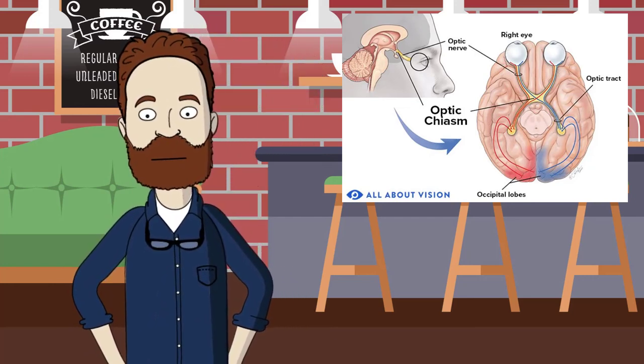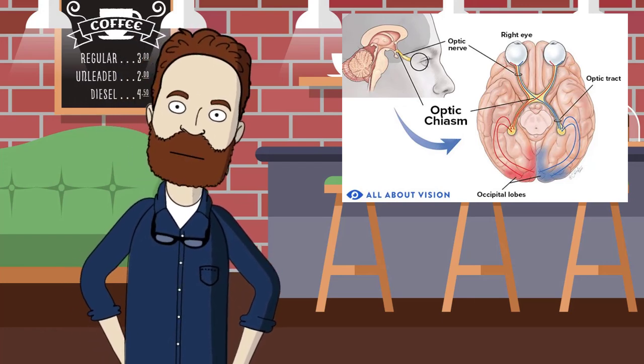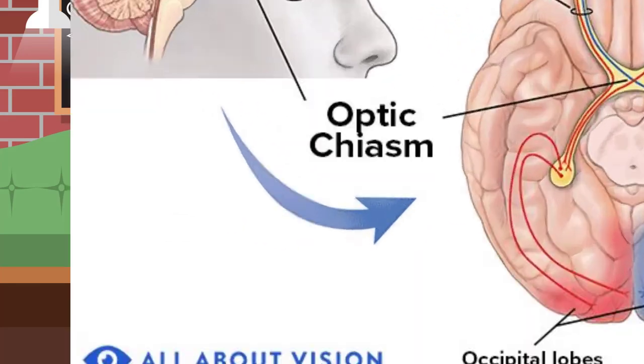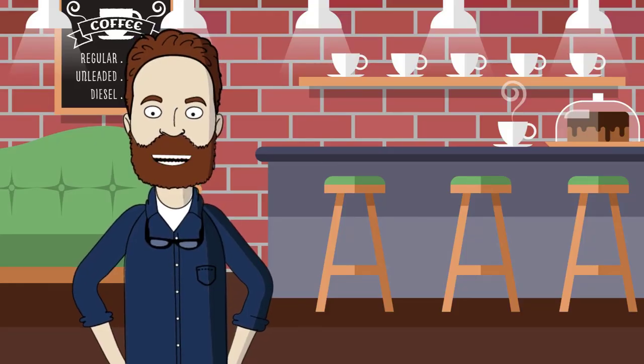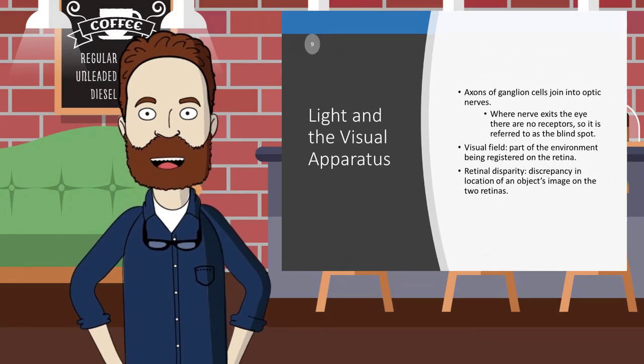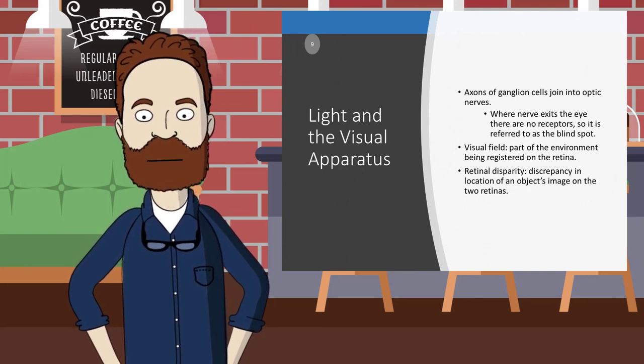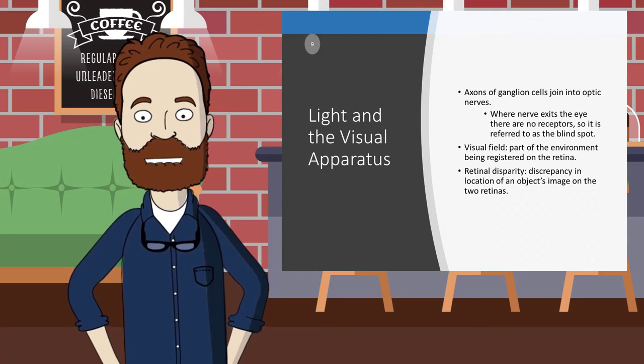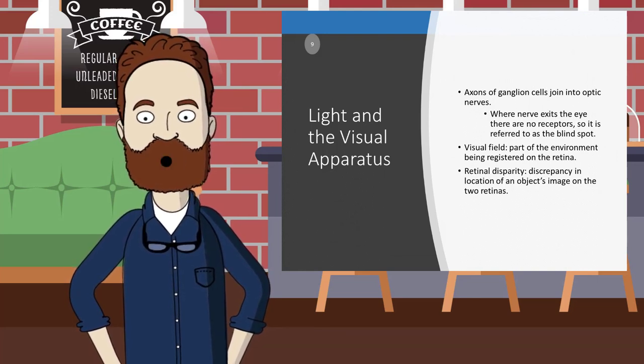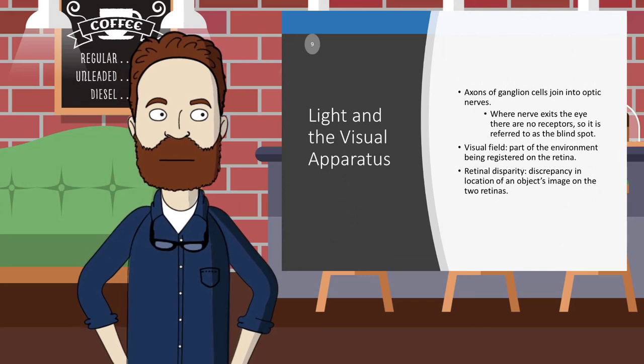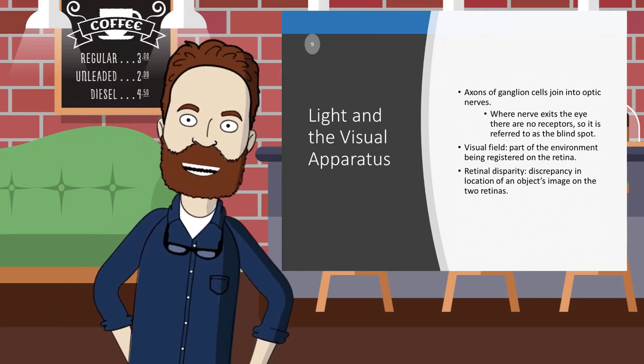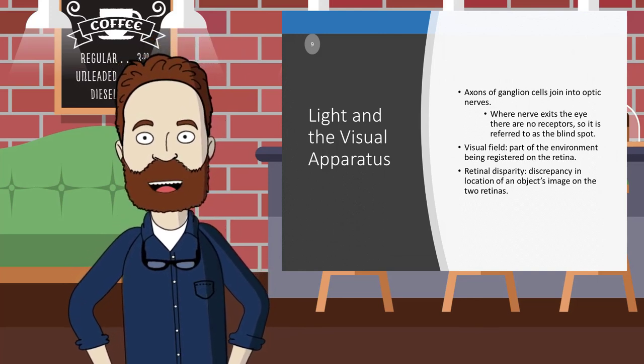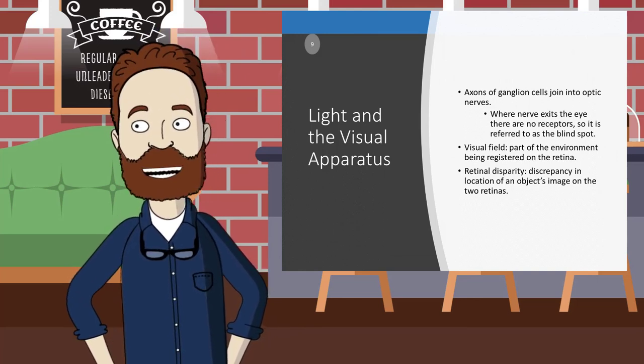Neurons from the outside half of each eye, the temporal side, do not cross over but go to the same side of the brain. We can also talk about retinal disparity, a discrepancy in the location of an object image on the two retinas detected in the visual cortex, where different neurons fire depending on the amount of lateral displacement. Information is then combined in the anterior parietal cortex with additional information about the object shape and location to determine the distance of objects.